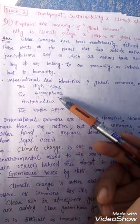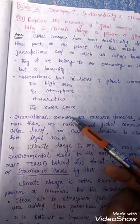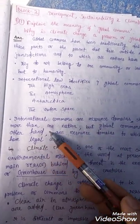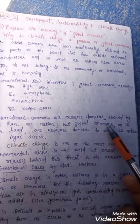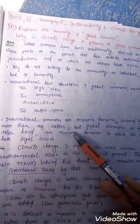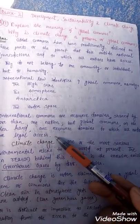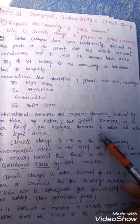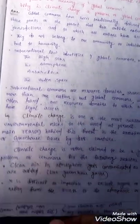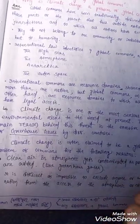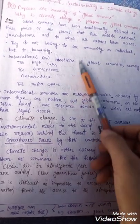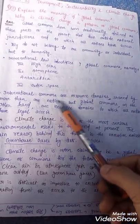The four global commons are: the high seas, the atmosphere, Antarctica, and outer space. International commons are resource domains shared by more than one nation, but global commons are resource domains to which all nations have legal access.